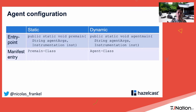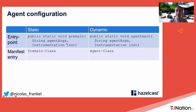There are two different agent entry points. Instead of the standard 'public static void main', agents use either 'premain' or 'agentmain'. The JVM passes an Instrumentation interface to you, which you can store for later use. In the manifest, you declare a premain-class or agent-class. Nothing prevents a jar from being both a static and dynamic agent.